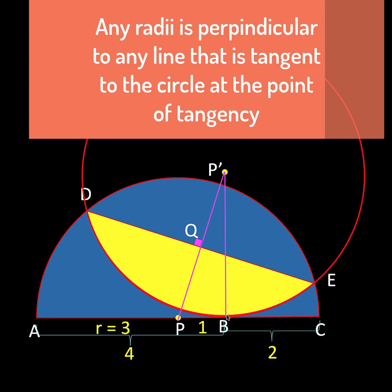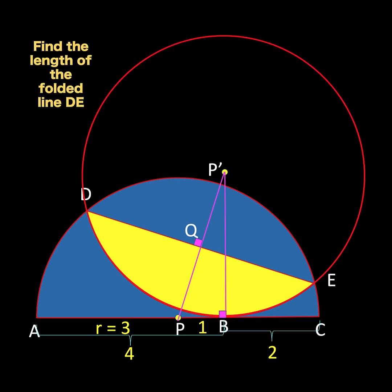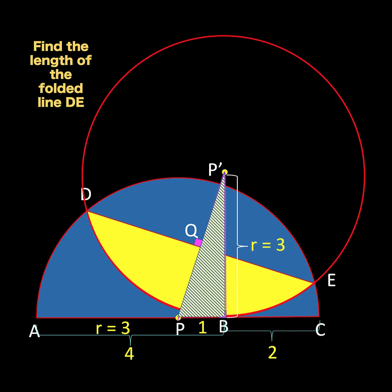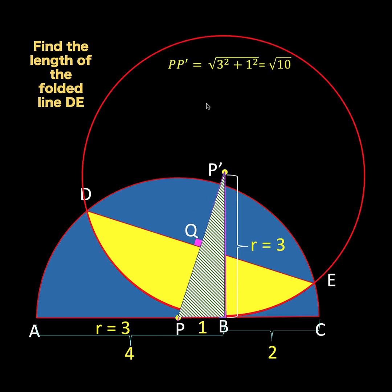Then let's construct a line segment from point P prime, which is the center of the red circle, perpendicular to the diameter of the blue semicircle. Since the radius of the red circle is three units, the length of P prime B must also equal three units. We now have a right triangle with legs of three and one unit respectively. We can compute the hypotenuse PP prime using the Pythagorean theorem: PP prime equals the square root of three squared plus one squared, which gives us the square root of ten.